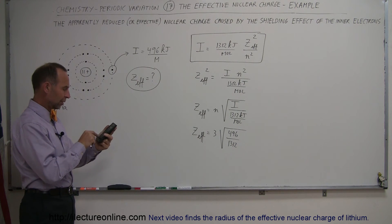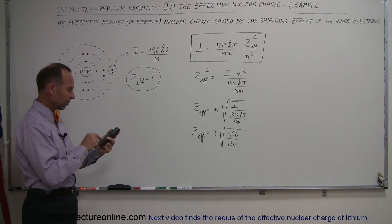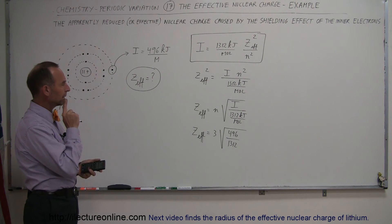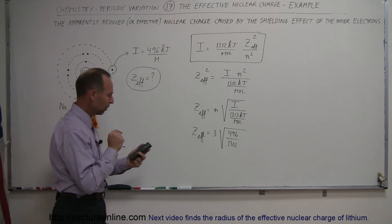So 496 divided by 1,312. Take the square root of that, multiply it times 3, and we get 1.845.